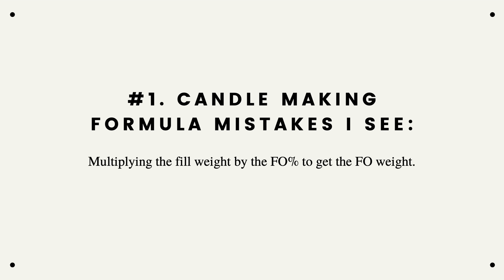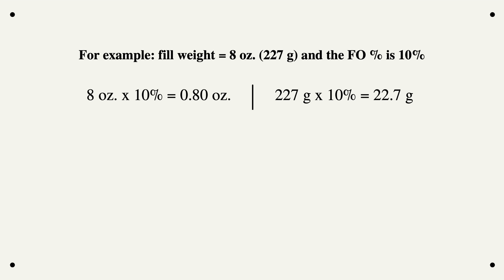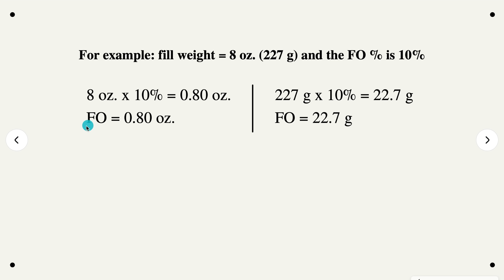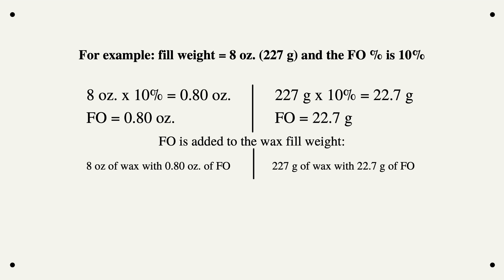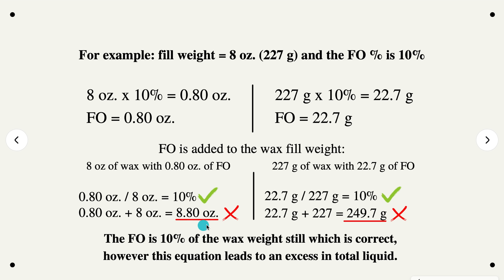Moving on to candle making formula mistakes. The first mistake is multiplying the fill weight by the fragrance oil percentage to get the fragrance oil weight. Using our example — fill weight of 8 ounces and 10% fragrance oil — a lot of people will multiply the fill weight by 10% to get the fragrance oil weight and then just add it on top of the fill weight. The issue is that you will have an excess of liquid and it's going to overflow your jar — it's not going to be the fill level you are wanting.